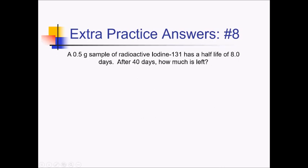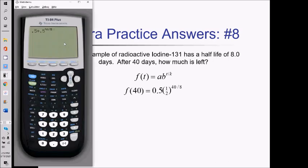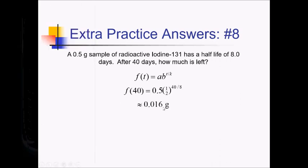On this problem, we have a 0.5-gram sample of iodine-131 with a half-life of 8 days. After 40 days, how much is left? Using F of T = AB to the T over K: A is 0.5, B is one-half, T is 40 days, and K is 8. On the calculator, that's 0.5 times 0.5 to the 40 divided by 8, giving approximately 0.016 grams of iodine.